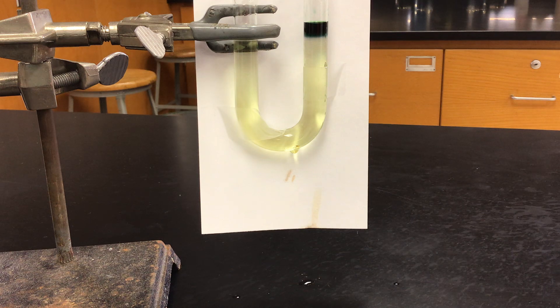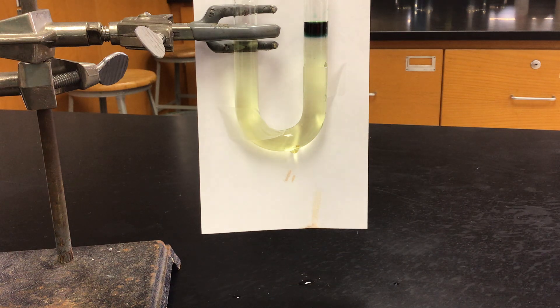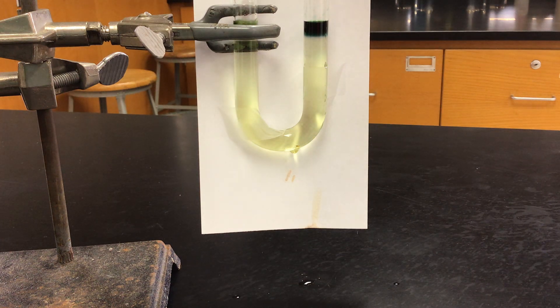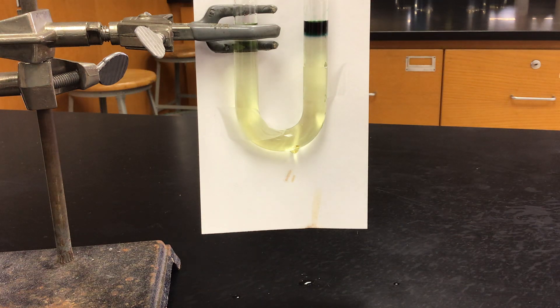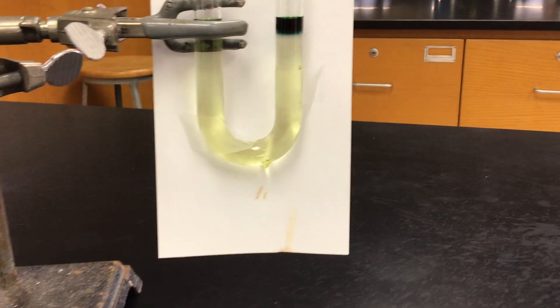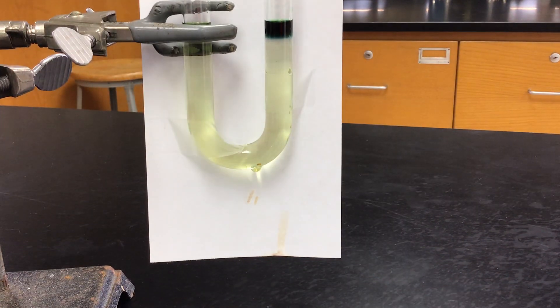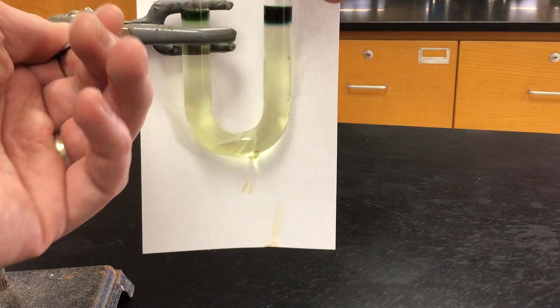And I'm going to add a drop on the left because that pH really shouldn't be changing, and it should be kind of green. I think what I'll do is maybe move the U-tube around and the clamp so we can kind of see what's going on here.